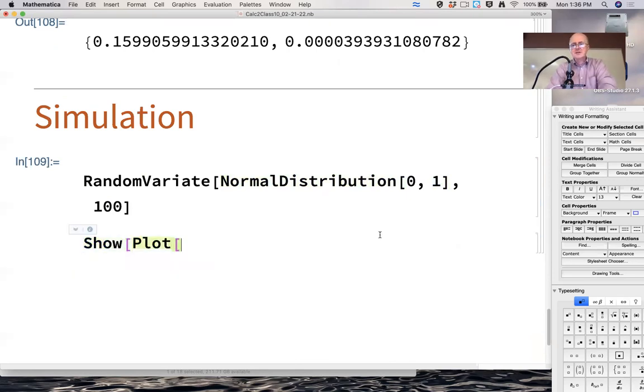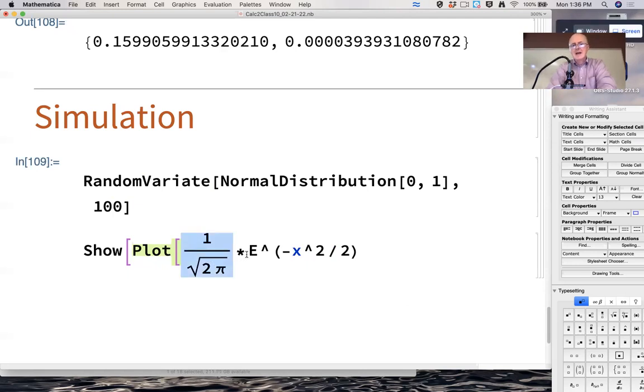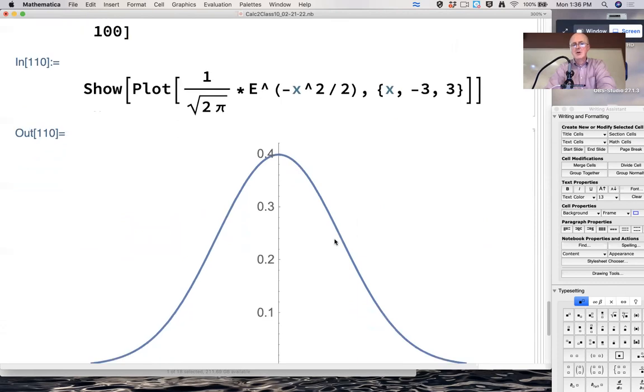I'm going to plot a function, and this function is the standard normal distribution, essentially. One over the square root of two pi times e to the negative x squared over two power. I'm going to plot that function which, there, it looks like a bell-shaped curve.